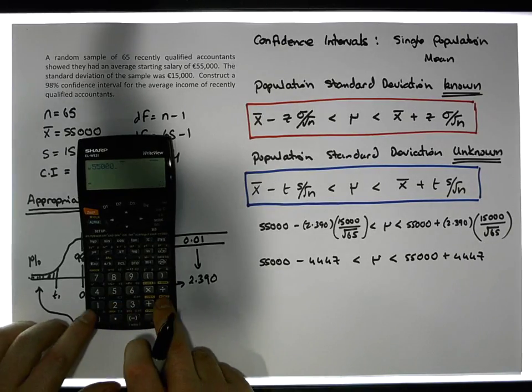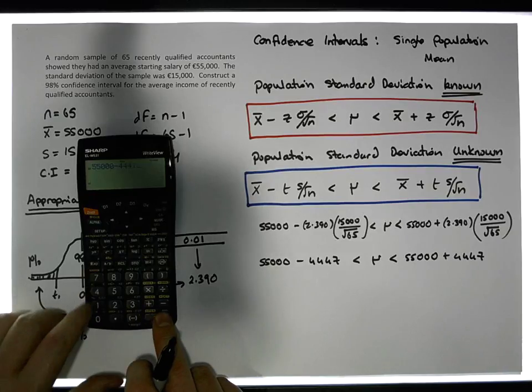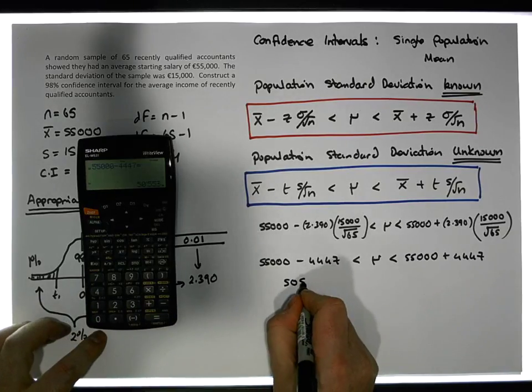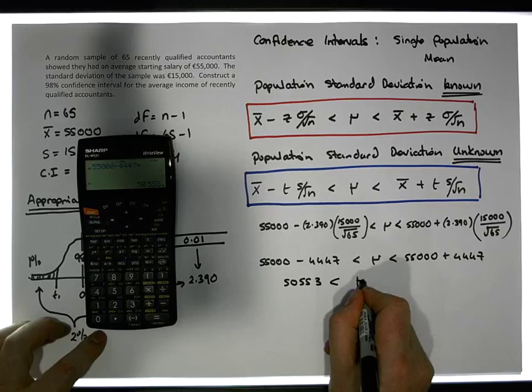55,000 euros minus 4,447 gives us 50,553 must be less than μ, which must be less than 59,447. And that's our confidence interval.